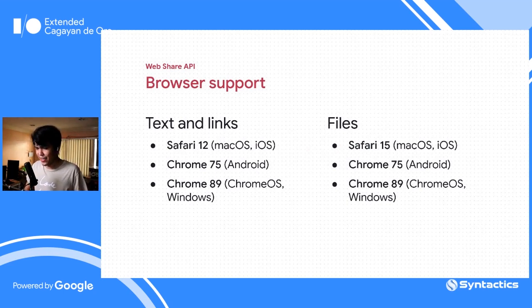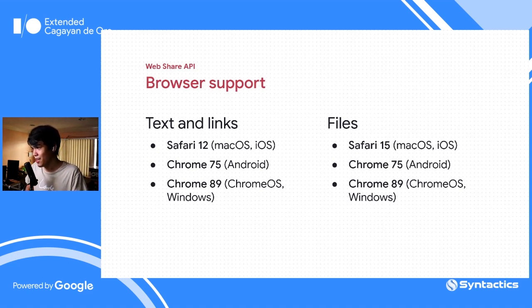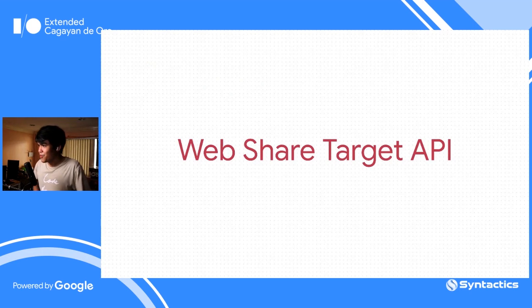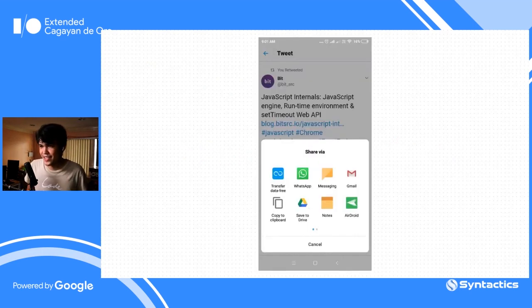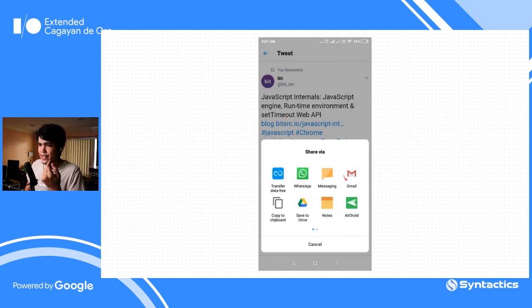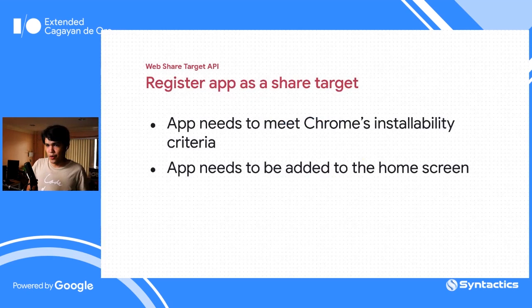But what if you want to share content into your web application? For example, you're using the Facebook app or file explorer, you see a file and want to share it into your web application. For that, we use another Project Fugu API called the Web Share Target API, which allows us to add our web application into the choices shown in the native share dialog.